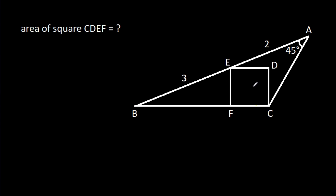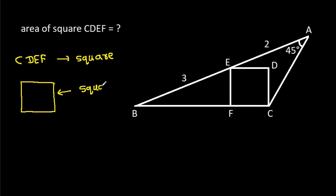We have to find the area of square CDEF. In any square, if we join the diagonal, the diagonal angles will be equal to 45 degrees. So here, if we join CE, then this angle will be 45 degrees.